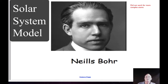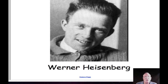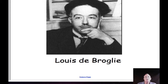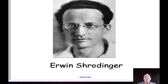In trying to explain this complex behavior, three scientists were instrumental in coming up with this new model. The three were Heisenberg, de Broglie, and Schrödinger. They came up with what they called the quantum mechanical model, or sometimes called the wave mechanical model, of the atom.